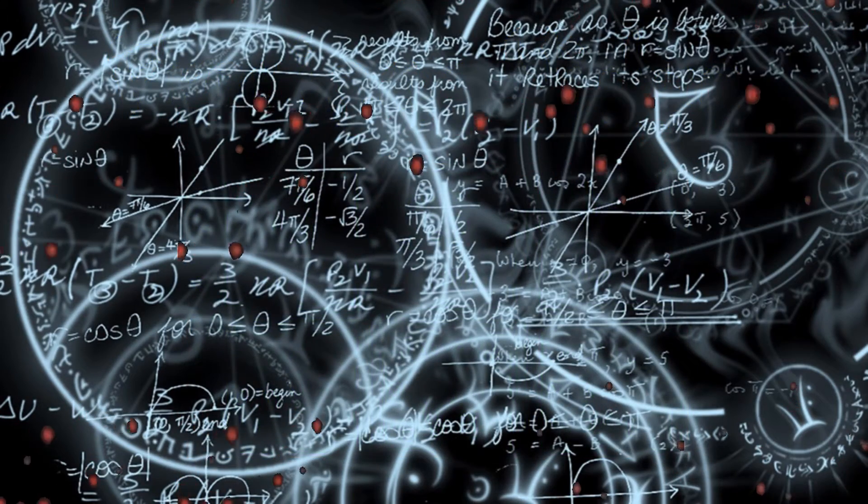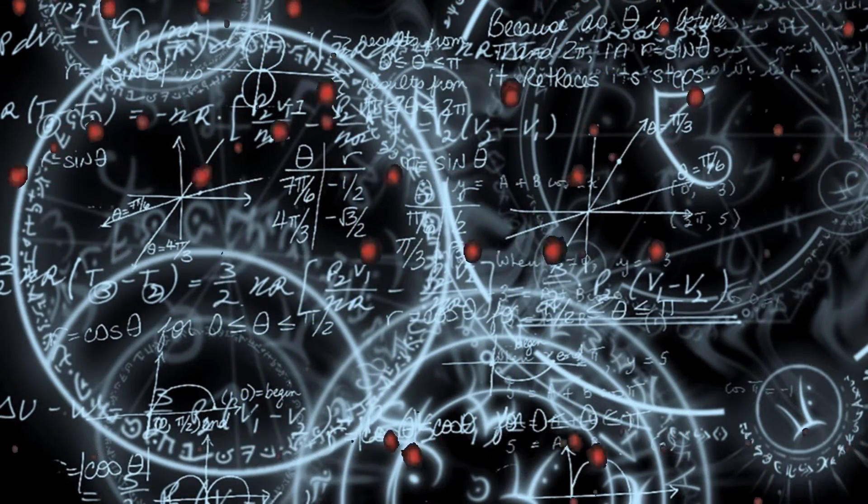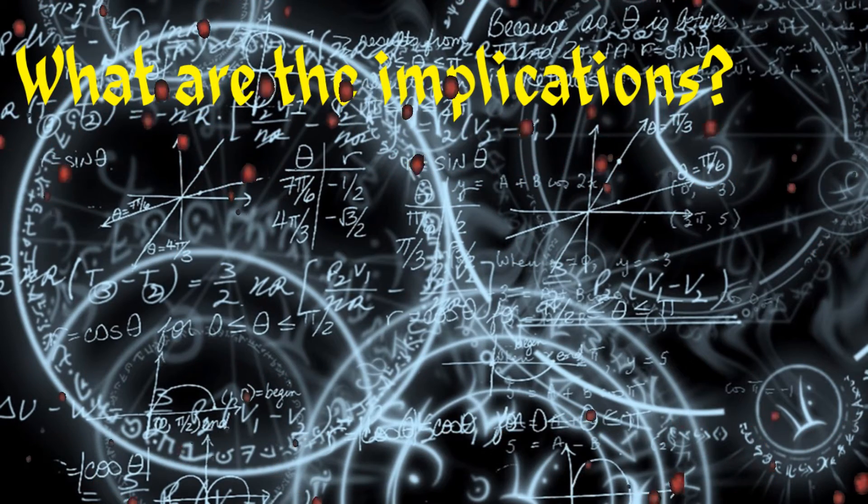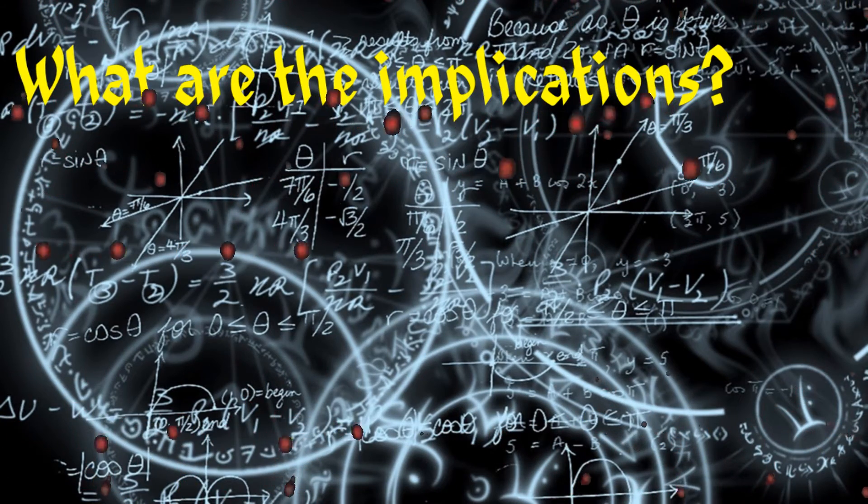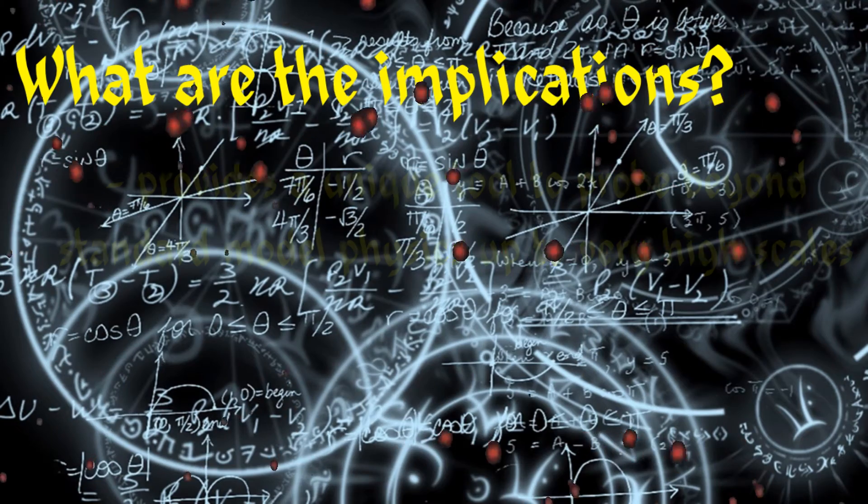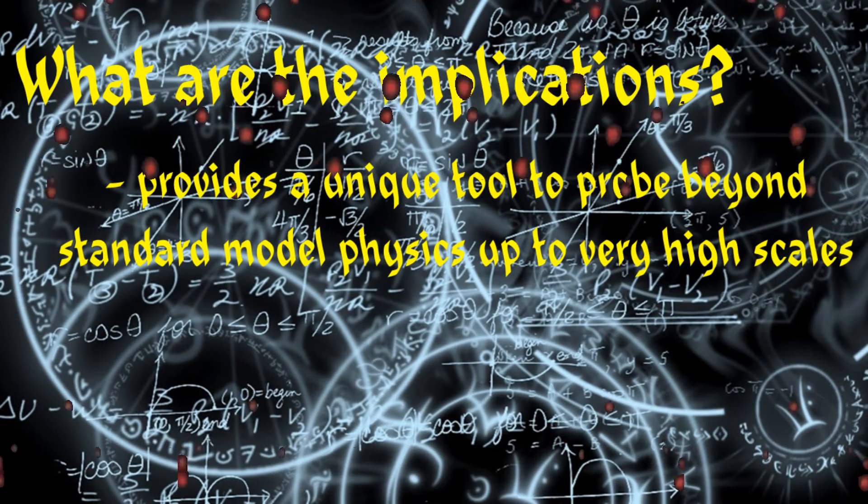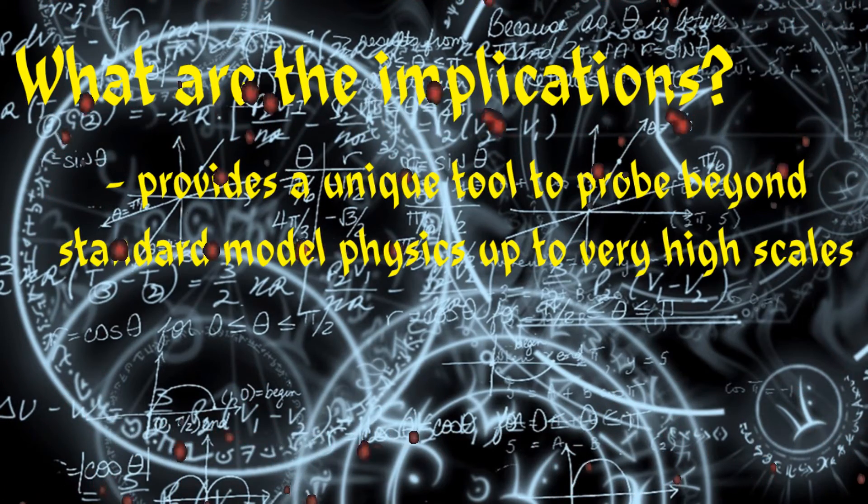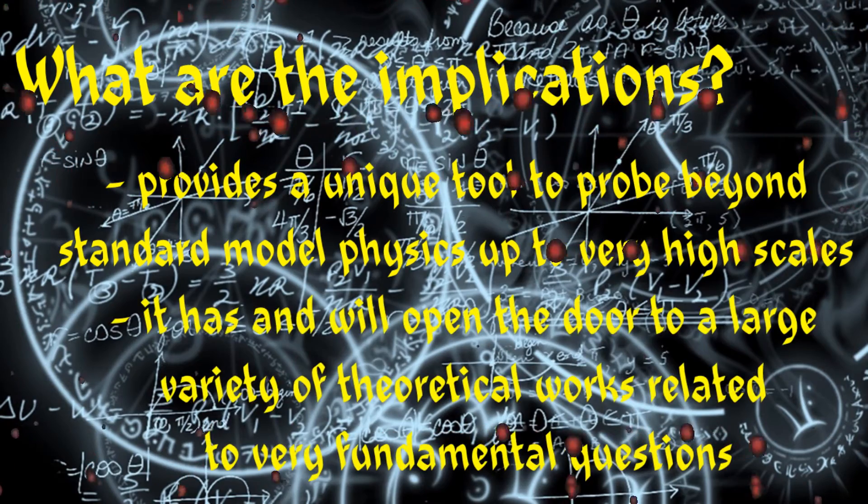Neutrinos are incredibly small, hard to detect, and nearly massless. What possible implications can they have? Although not noticeable in everyday life, it provides a unique tool to probe beyond standard model physics up to very high scales, and it has, and will, open the door to a large variety of theoretical works related to very fundamental questions.